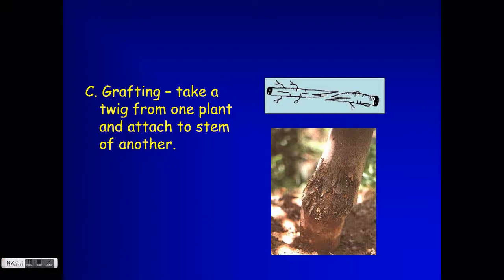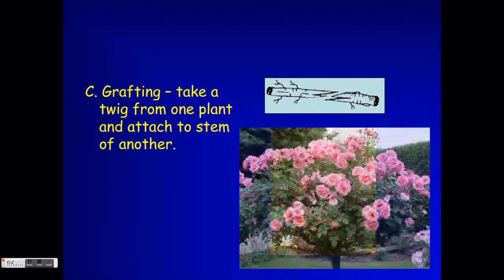Grafting is something that definitely doesn't happen in nature, but humans have learned how to do it. With grafting, it's like making puzzle pieces — notice that the notch on one piece and the notch on the other are complementary and will fit together. The root system of one plant is combined with the stem of a whole different tree; they are notched to be complementary, then wrapped with landscaper's tape and fused together. This process takes a twig from one plant and attaches it to the stem of another.